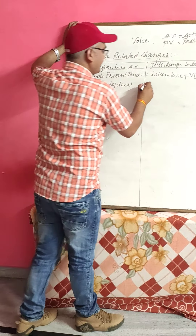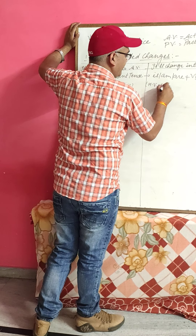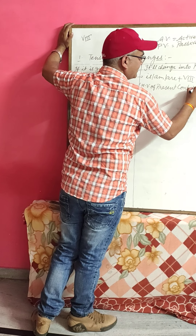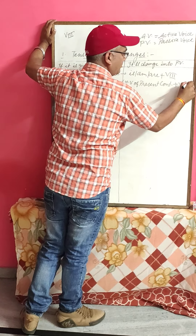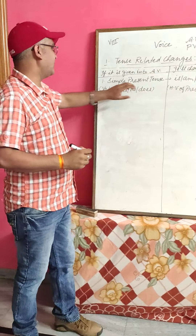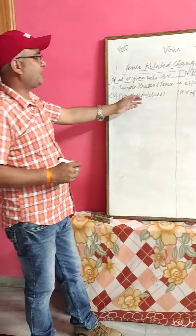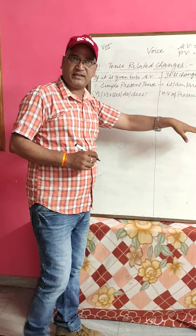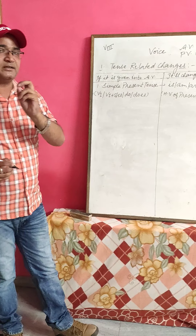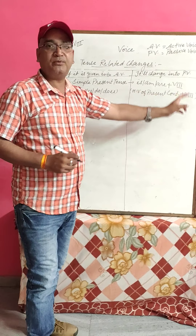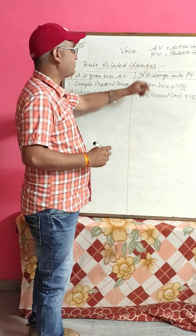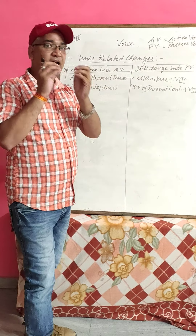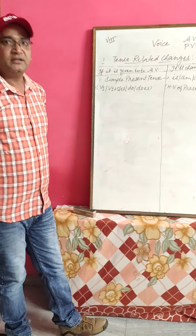In passive voice, we have to use the helping verb of present continuous tense plus third form of the verb. So we didn't say that simple present tense active voice will change into present continuous tense. Rather, in passive voice, present continuous tense is am/is/are plus V1 plus ING, and because in passive voice we use the third form, we use the helping verb of present continuous tense.